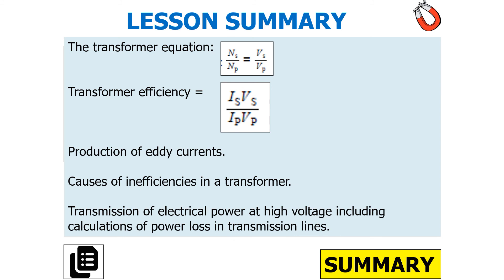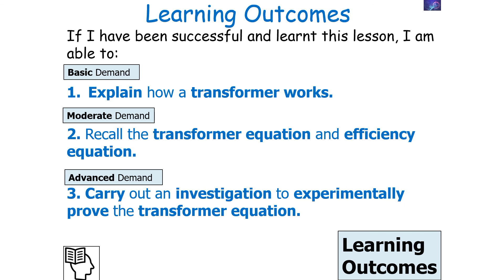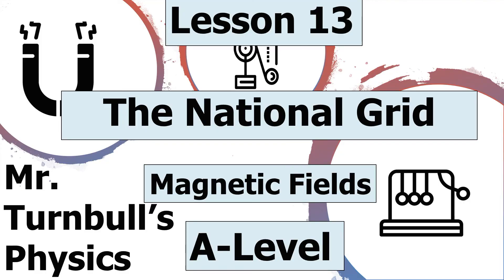So what have we learned in today's lesson? The transformer equation is N_s over N_p equals V_s over V_p. Transformer efficiency is given by I_s V_s over I_p V_p. We understand what eddy currents are and the causes of inefficiency in a transformer, and from this particular lesson we understand transmission of electrical power at high voltage including calculations of power loss in the transmission lines. If we have been successful today, we can understand and explain how a transformer works, recall the transformer equation, and understand how this links to the national grid. Thank you very much for listening and have a lovely day.